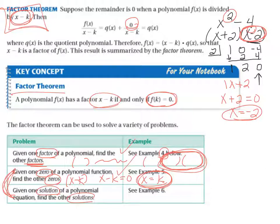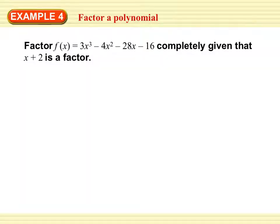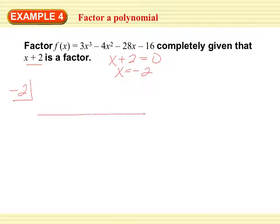Pay attention to each of these examples because there's just going to be one of each. Factor this completely if x plus 2 is a factor. Since x plus 2 equals 0 gives x equals negative 2, that's what I put in the box. My coefficients are 3, 4, 28, and 16. Drop the first one, multiply, add, multiply, add.